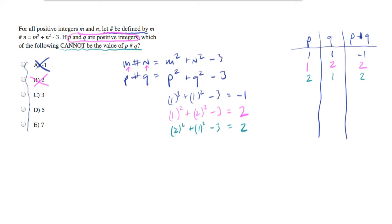Let's try two and two. Two squared plus two squared minus three equals four plus four is eight minus three is five.